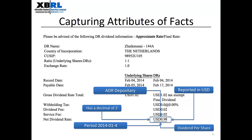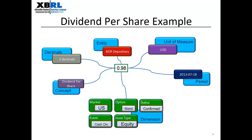XBRL is a powerful tool for reporting corporate action data because it can give context to a single data point, like the number 98 cents shown here. This report is a dividend announcement for a company in the Netherlands. XBRL can tell the consumer of that data about the value of 98 cents. Looking at the blue boxes surrounding the value, you can see that the 98 cents represents dividends per share, is reported in US dollars, is reported specifically for the time period January 4th 2014, and is reported to an accuracy of within two decimals.